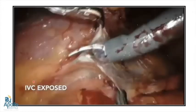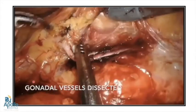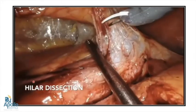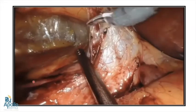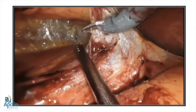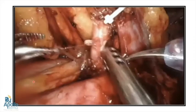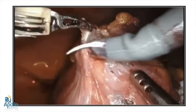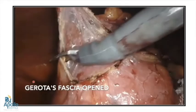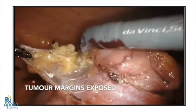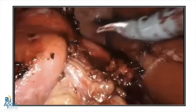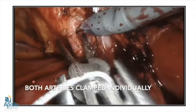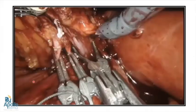Once the colon is mobilized, we lift the lower pole fat to identify the ureter. On the right side, it is important to drop the gonadal vessels to prevent inadvertent traction. The hilar vessels are then dissected individually — both artery and vein — and we should always look for an accessory artery. The tumor is demarcated by opening Gerota's fascia all around, maintaining 1–2 cm of normal parenchymal margin. Since this tumor lies close to the sinus fat, the sinus fat is also dissected well.